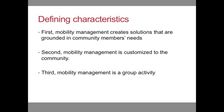In conclusion, let's look one more time at the defining characteristics of mobility management. First, mobility management creates solutions that are grounded in community members' needs — no mobility management solution can be created in a vacuum without knowledge of those needs. Second, mobility management is customized to the community; solutions will differ by communities according to their needs, resources, values, and preferences. Third, mobility management is a group activity. A mobility manager is the vanguard of a community's mobility management activities, but not the only participant. Without a strong network behind them, a mobility manager cannot identify and respond to community needs and innovate solutions. This network of partners is key to successful mobility management.